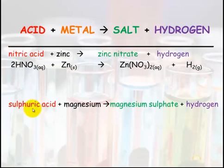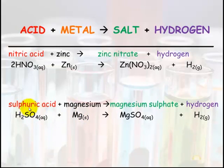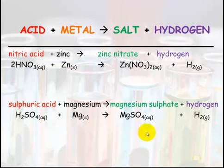Another example: sulfuric acid plus magnesium makes magnesium sulfate and hydrogen gas. Write down your formula for sulfuric acid and magnesium and then you'll be able to work out the products. Sulfuric acid H₂SO₄ aqueous — don't forget your states — plus magnesium solid, makes hydrogen gas H₂, and what's left? Magnesium hooks up with SO₄ to make magnesium sulfate aqueous.